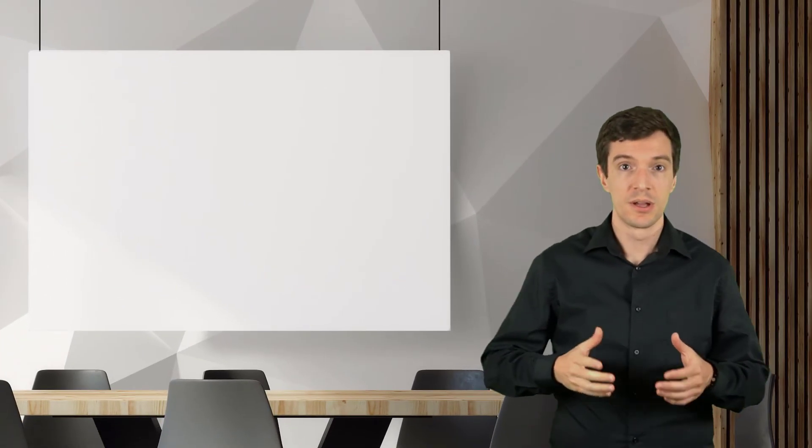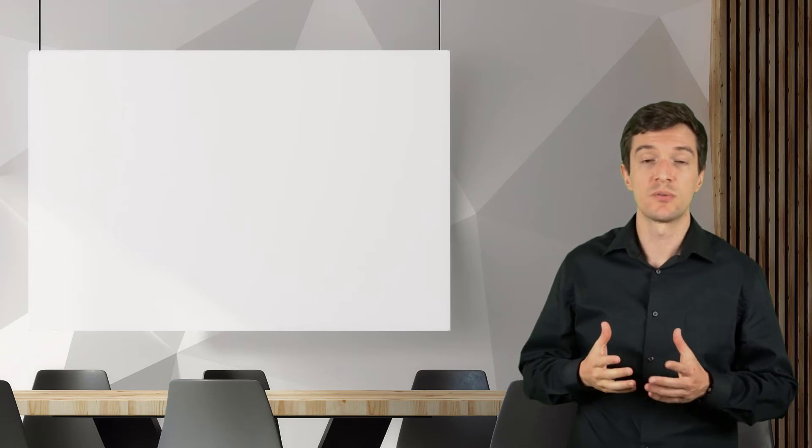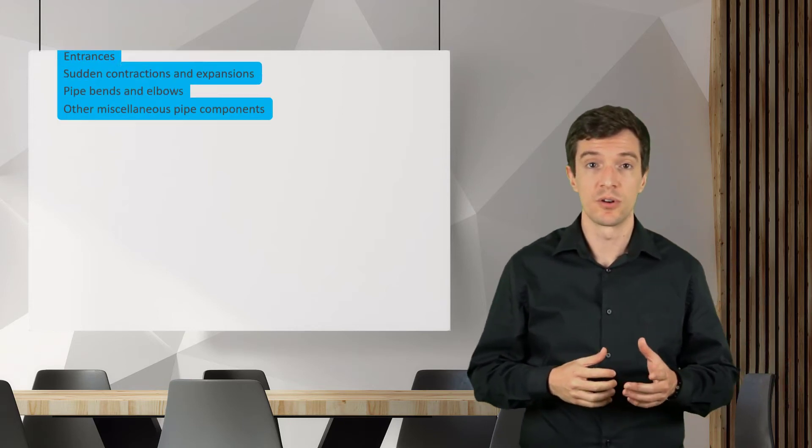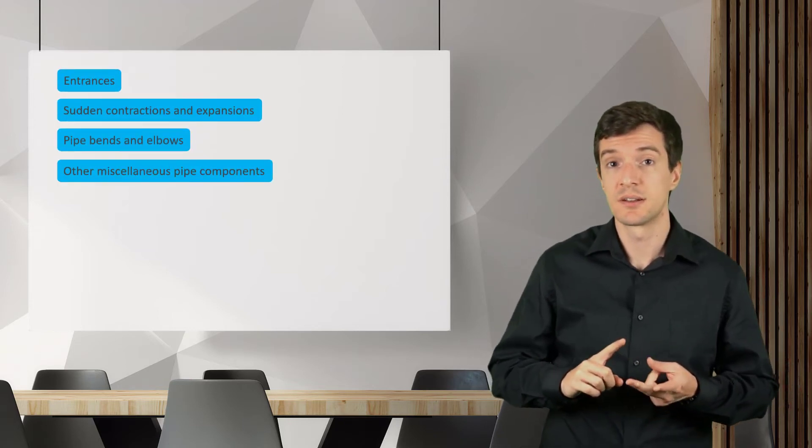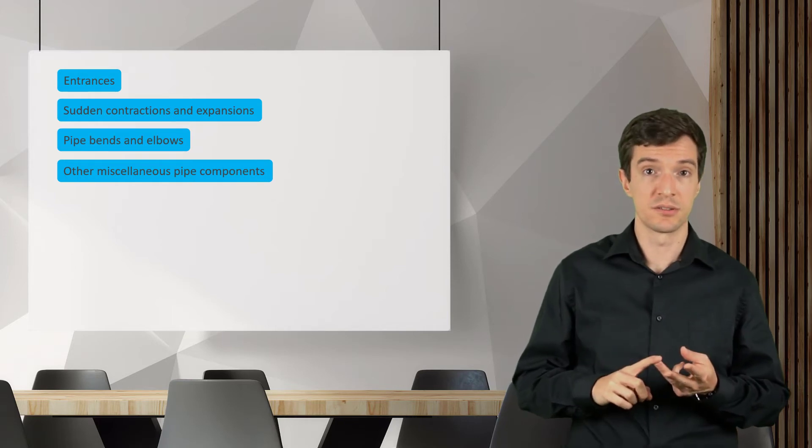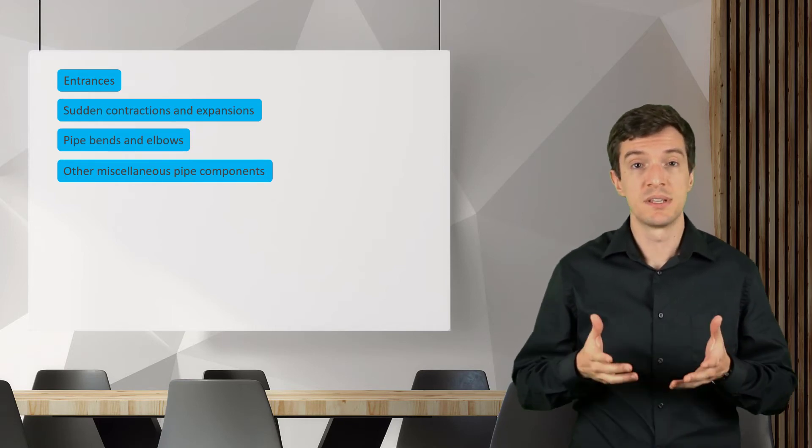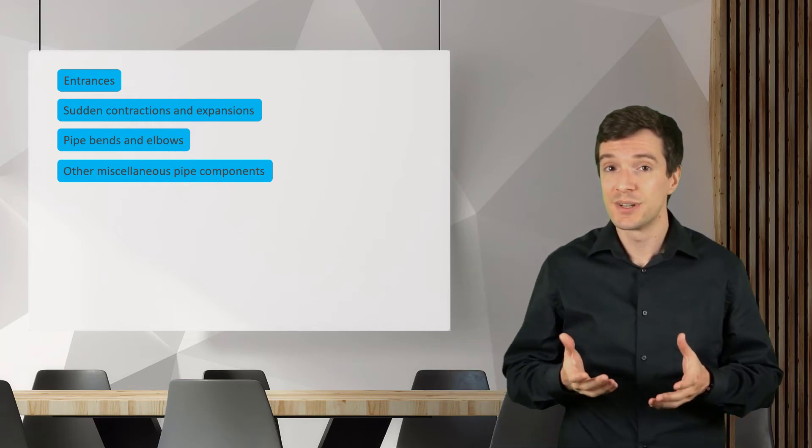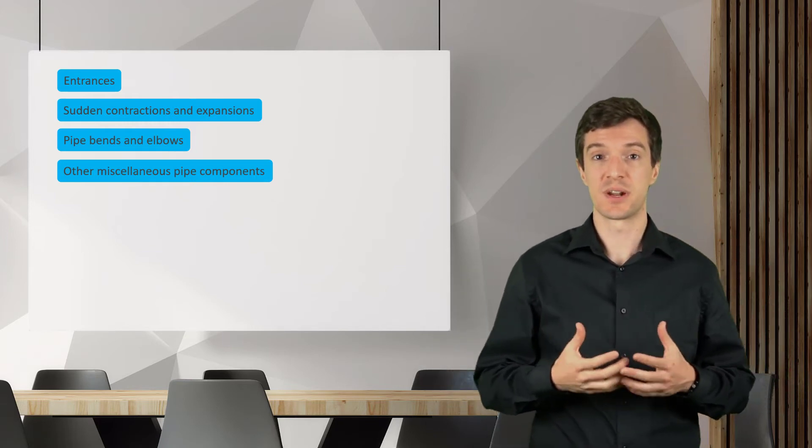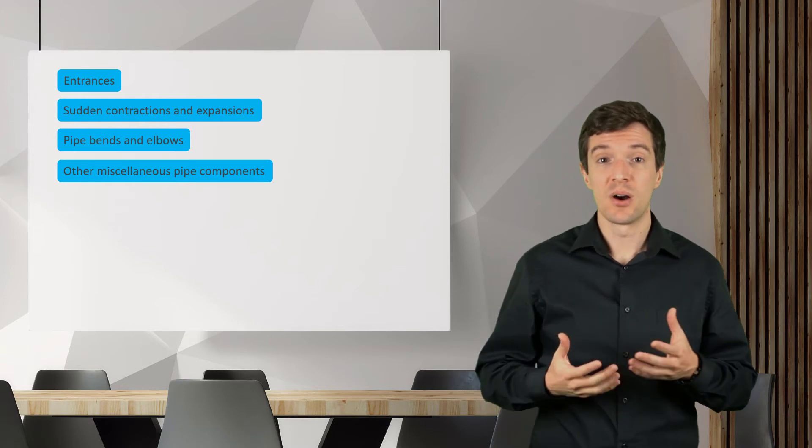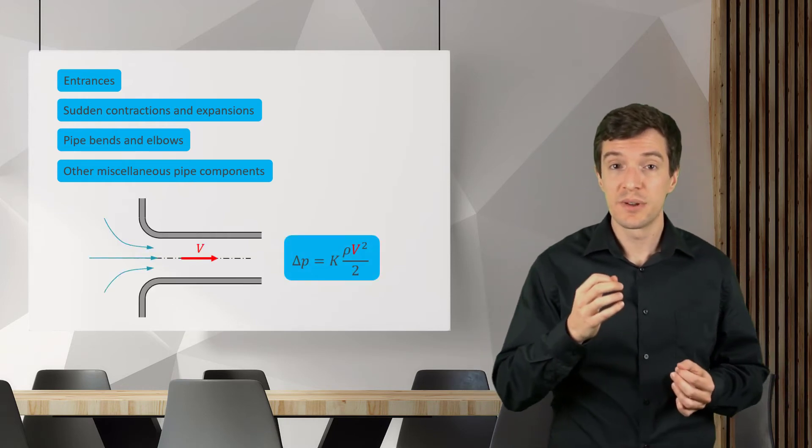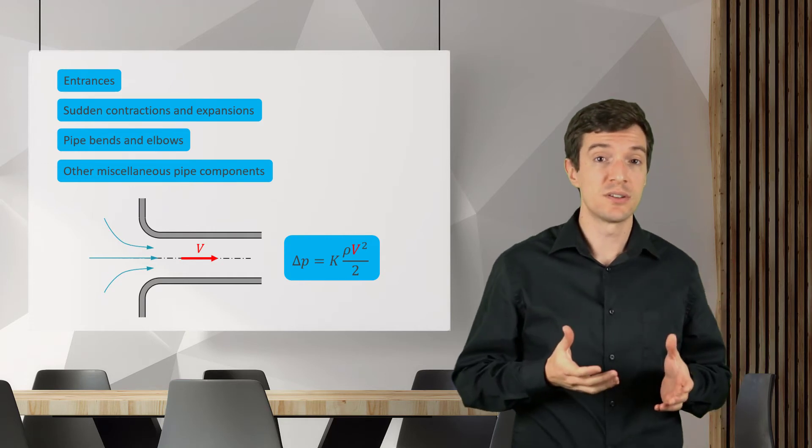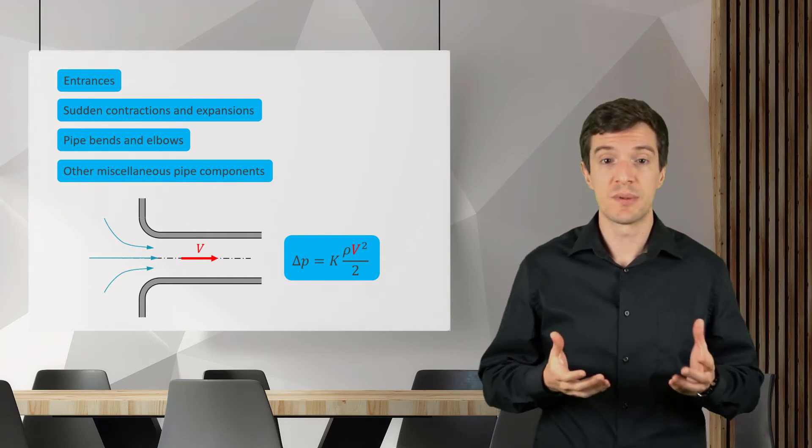Now, let's analyze different components that generate minor losses. In particular, we are going to analyze the K factor for entrances, sudden contractions and expansions, pipe bends and other miscellaneous pipe components. For each component, we need to estimate the pressure drop based on the kinetic energy. So, we need to properly choose the reference velocity to compute the minor losses.